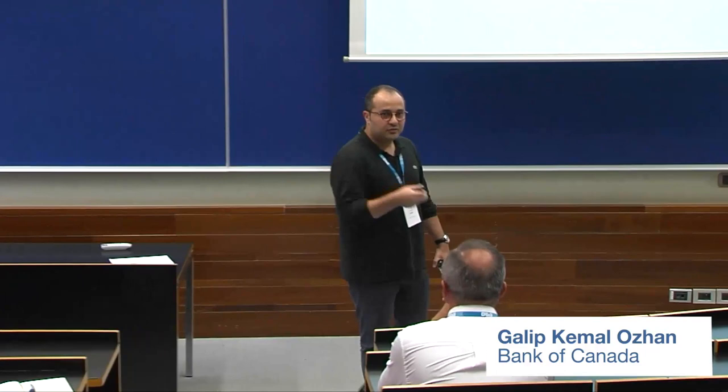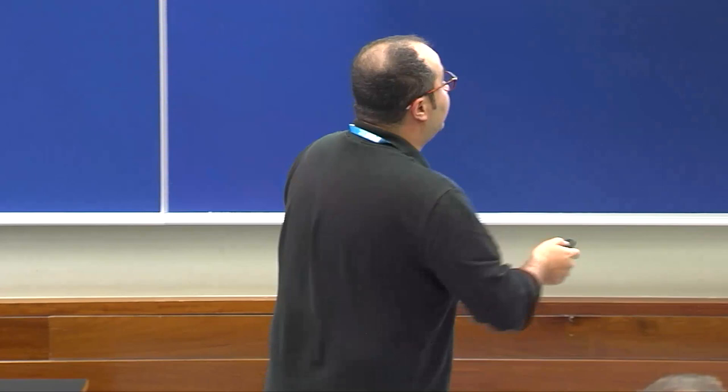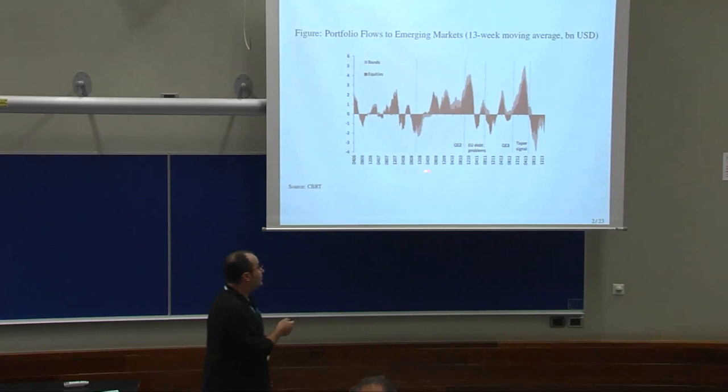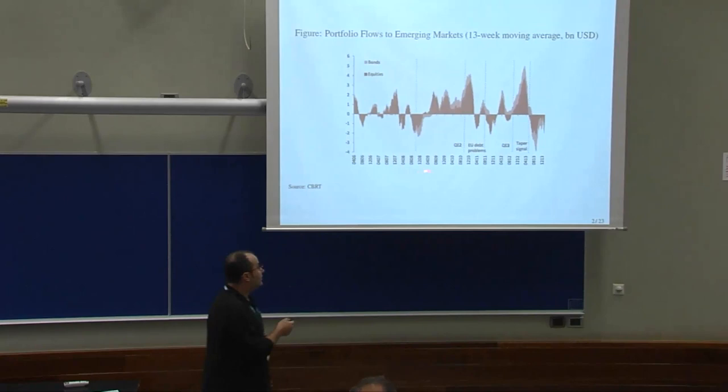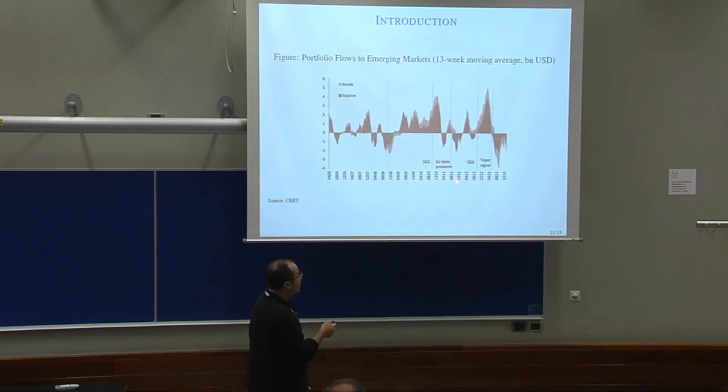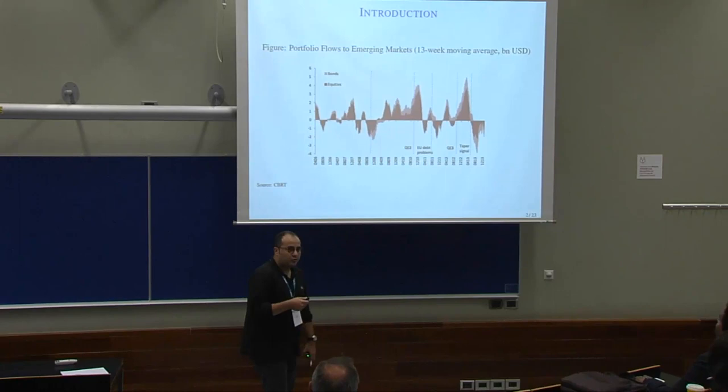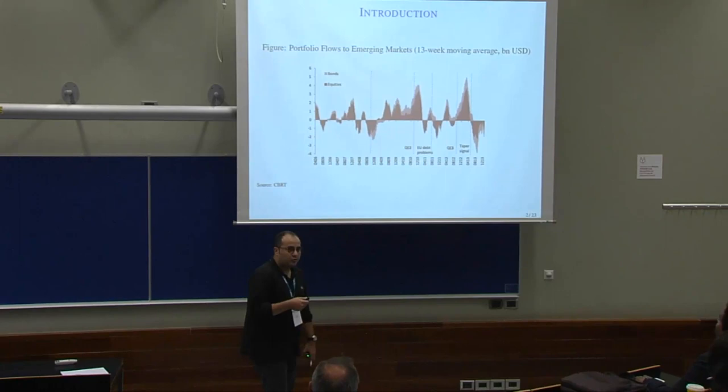This paper is joint work with Fabio Gironi from the University of Washington. We basically ask whether interest rate uncertainty can be used as a capital management tool in an open economy. Starting with the cyclical pattern of capital flows, emerging markets have been subject to volatile capital flows constantly. This graph shows portfolio flows into emerging markets from April 2006 to December 2013, demonstrating increases in size and changes in direction of capital inflows, especially after advanced economy unconventional monetary policy.